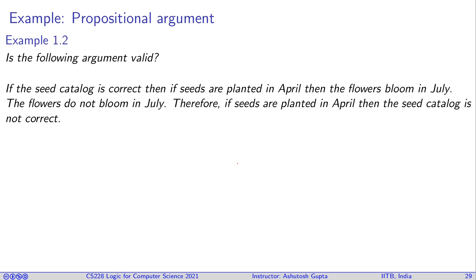So here's an example. If the seed catalog is correct and if seeds are planted in April then the flowers bloom in July. Flowers do not bloom in July, therefore if seeds are planted in April then the seed catalog is not correct. Think for a minute and try to see if this argument is valid or not.